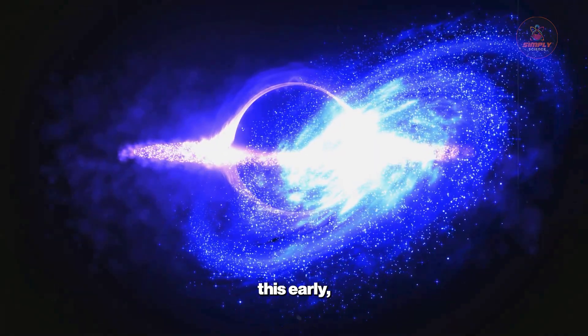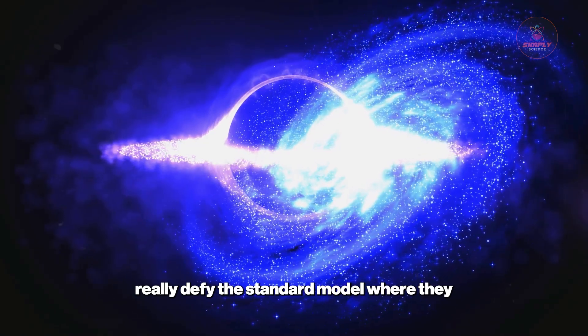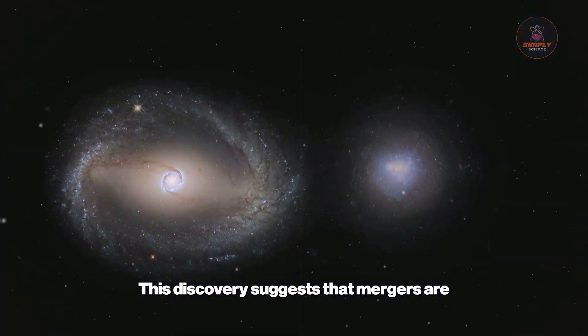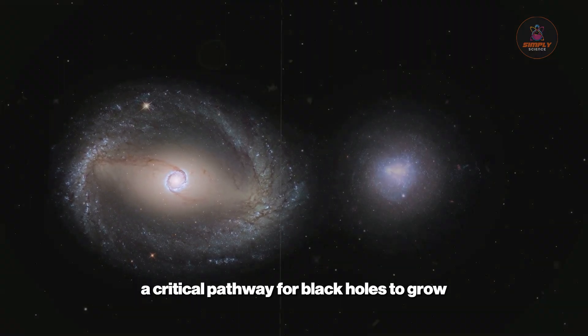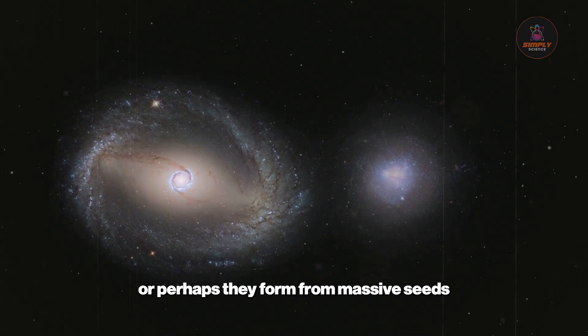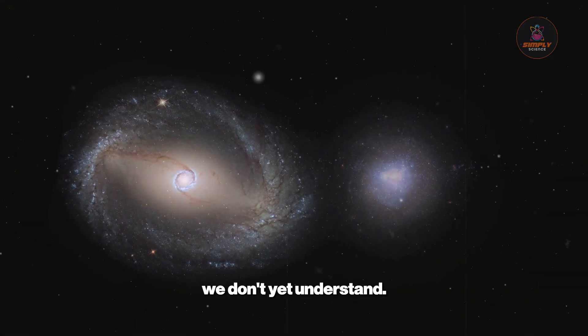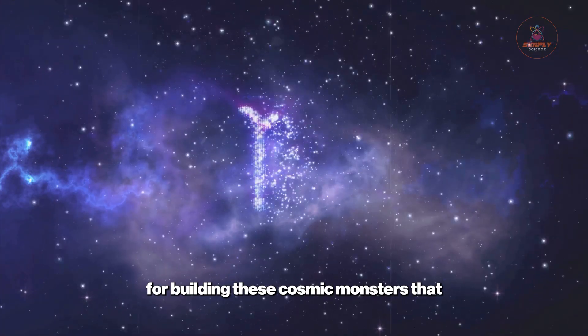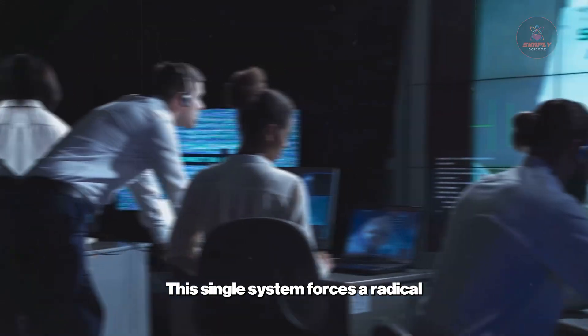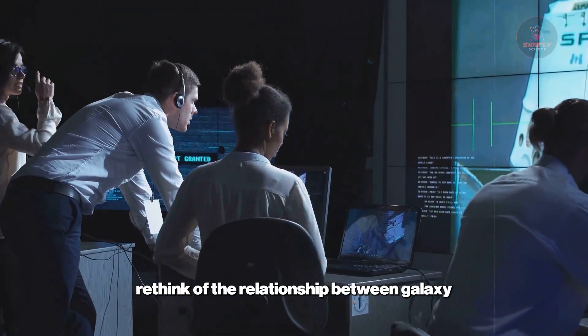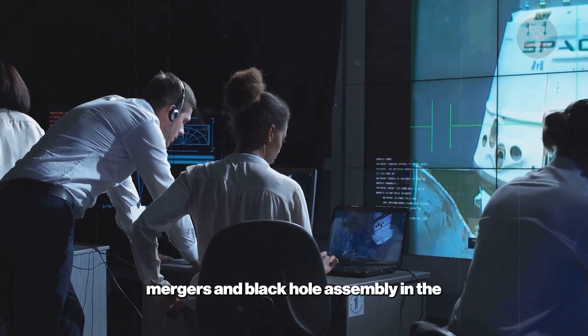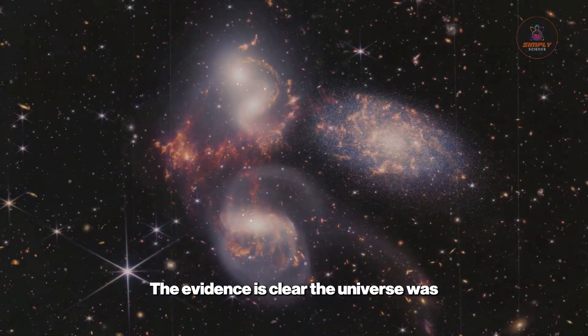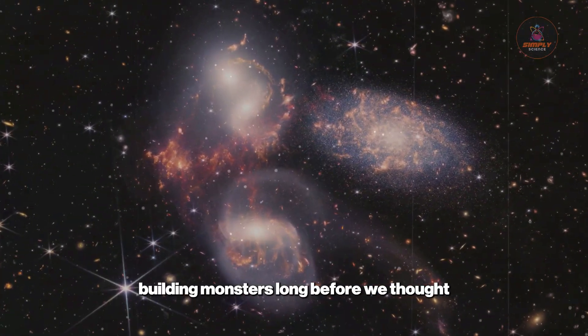Black holes this big, this early, really defy the standard model, where they are expected to grow slowly over billions of years. This discovery suggests that mergers are a critical pathway for black holes to grow at extreme rates in the early universe—or perhaps they form from massive seeds we don't yet understand. It implies the universe had a fast track for building these cosmic monsters that our theories haven't accounted for. This single system forces a radical rethink of the relationship between galaxy mergers and black hole assembly in the first billion years of cosmic time. The evidence is clear: the universe was building monsters long before we thought it was possible.